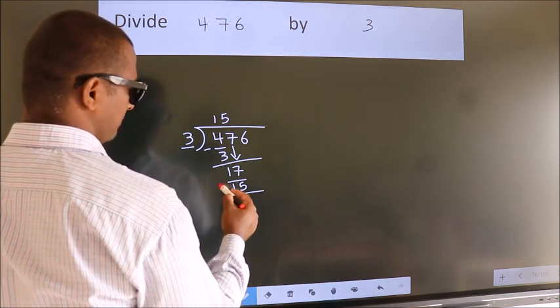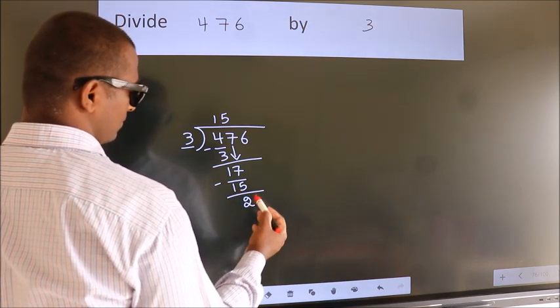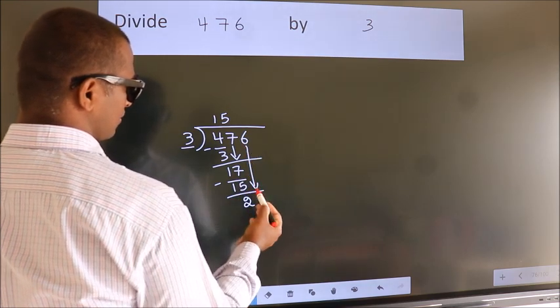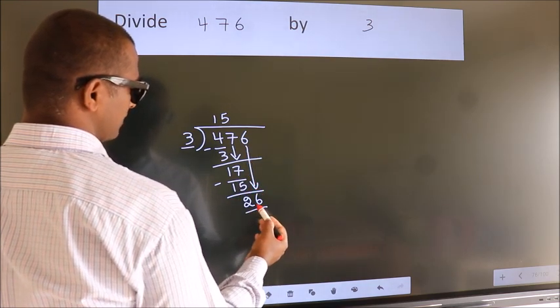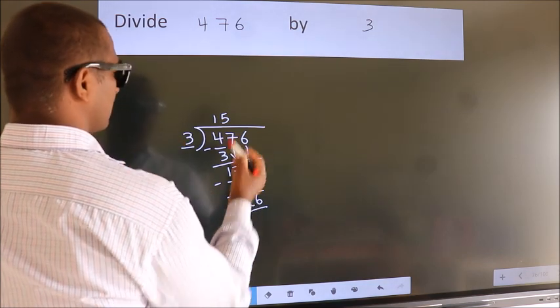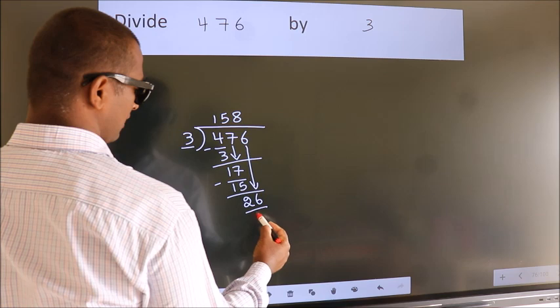Now, we subtract. We get 2. After this, bring down the beside number. So, 6 down. So, 26. A number close to 26 in 3 table is 3 eights 24.